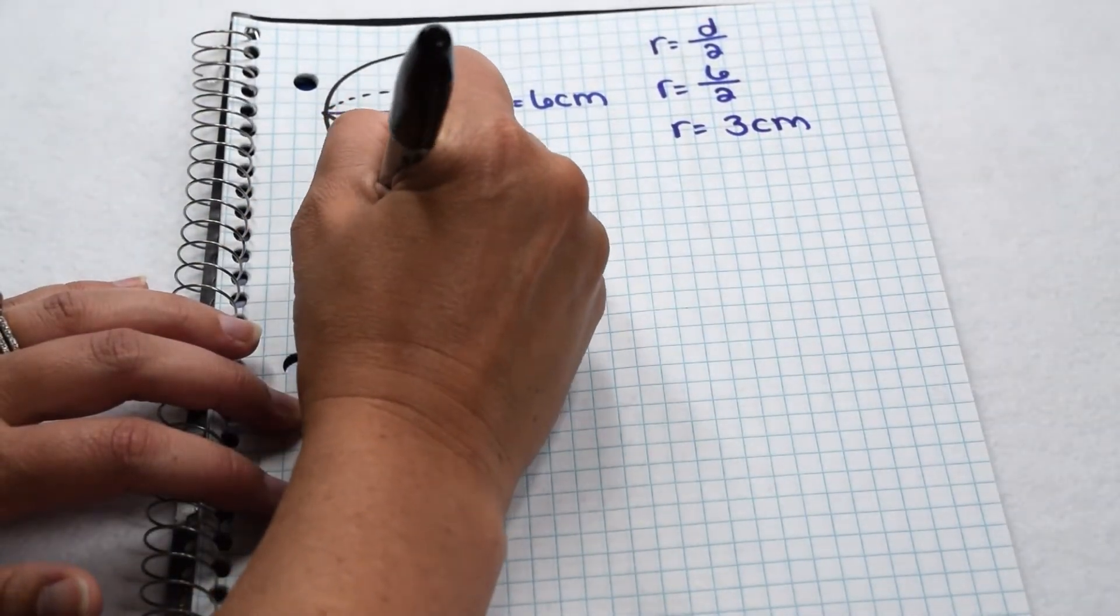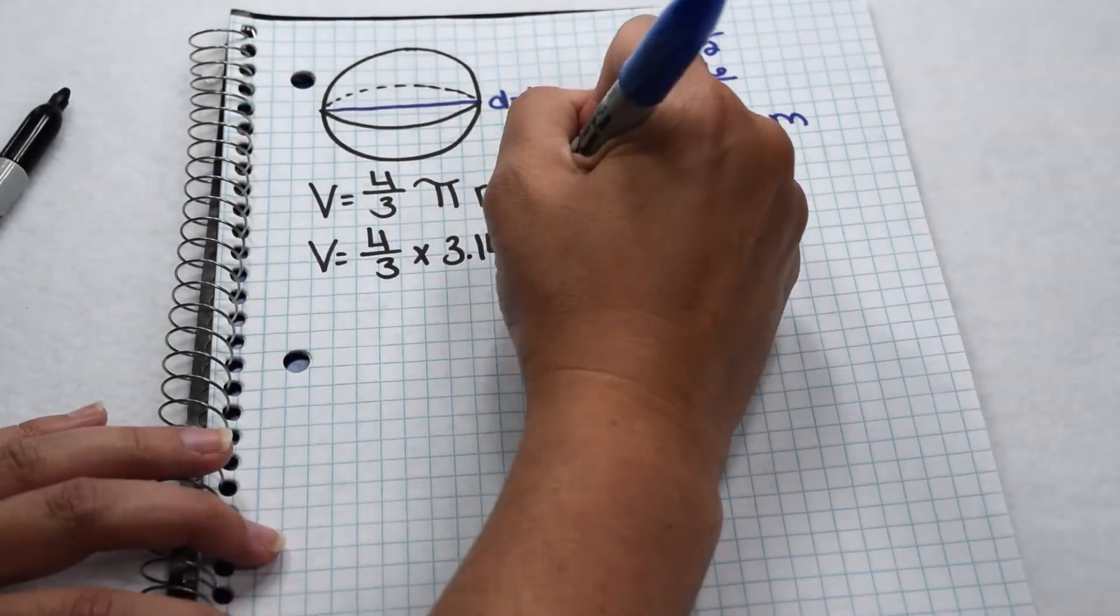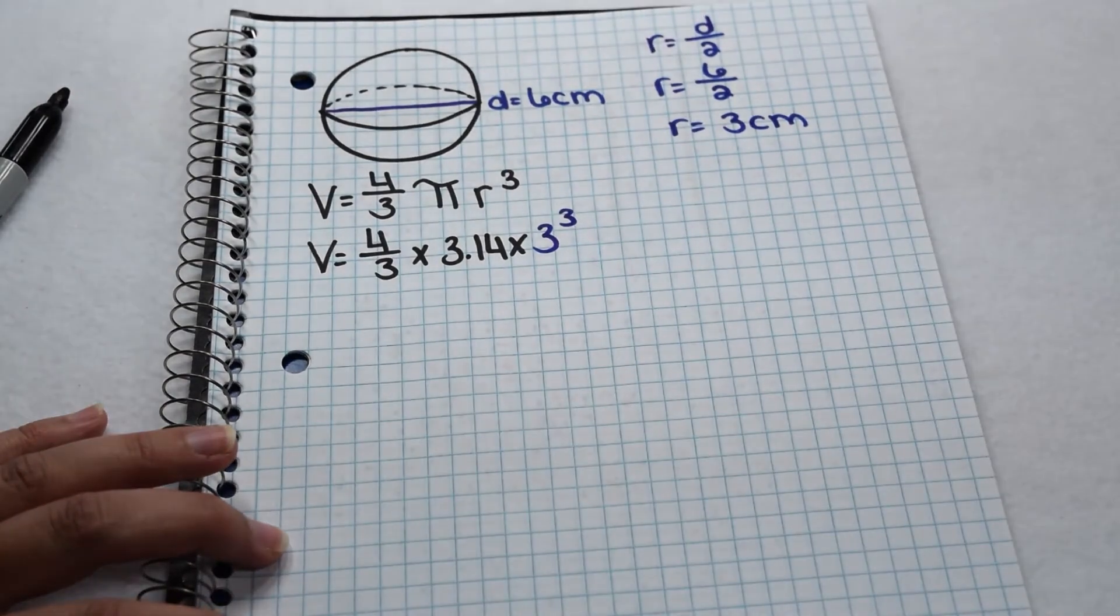Now we can substitute that into our equation. That means our volume is going to be four-thirds times 3.14 for pi multiplied by three cubed.